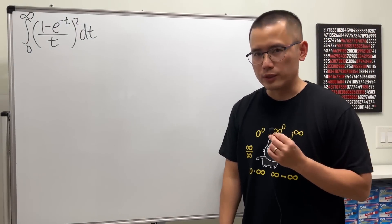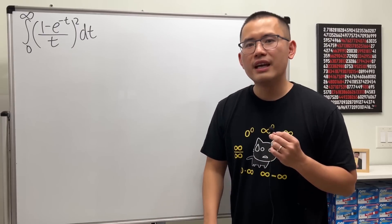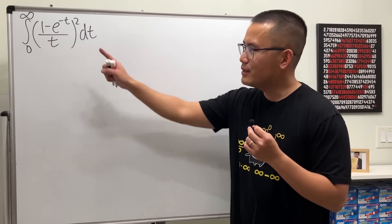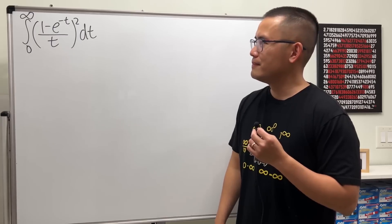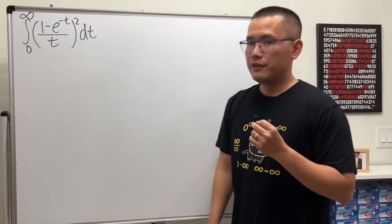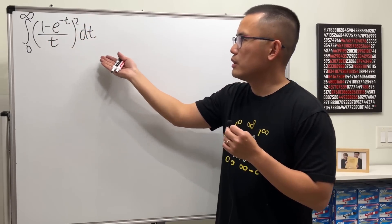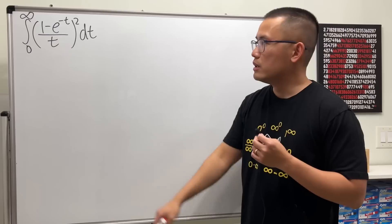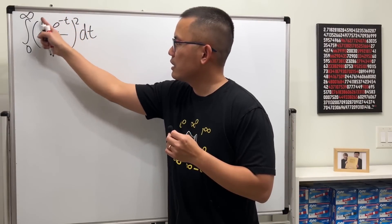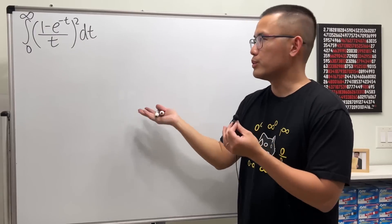I haven't done any hard integrals for a while, so I have this one for you today. Please pause the video and try this first. Let's get started. If we don't have the square here, this integral will diverge — so thanks to the square. Also, it's not possible to find an antiderivative for this function directly, so don't think about that approach.